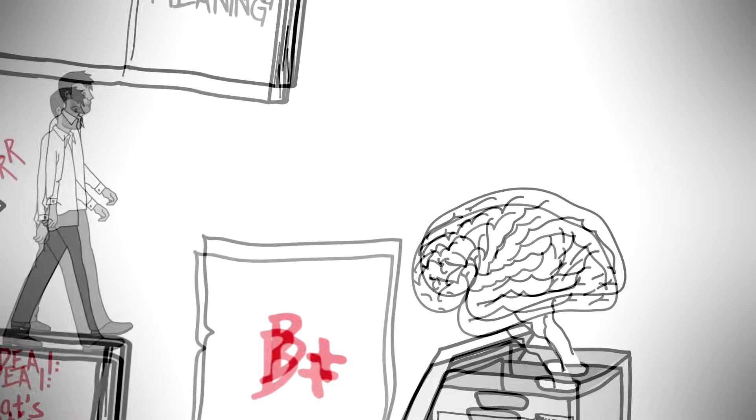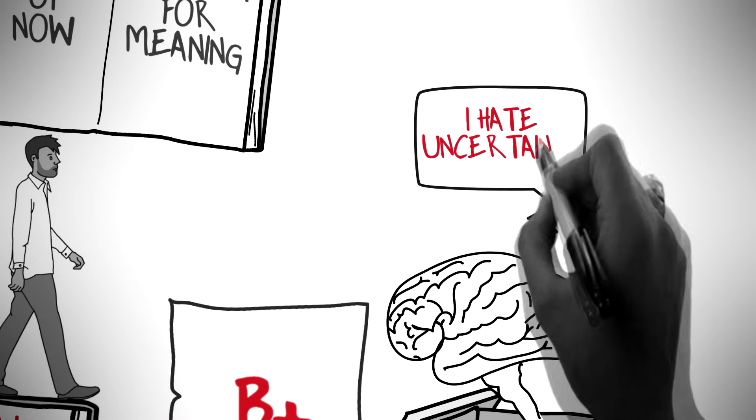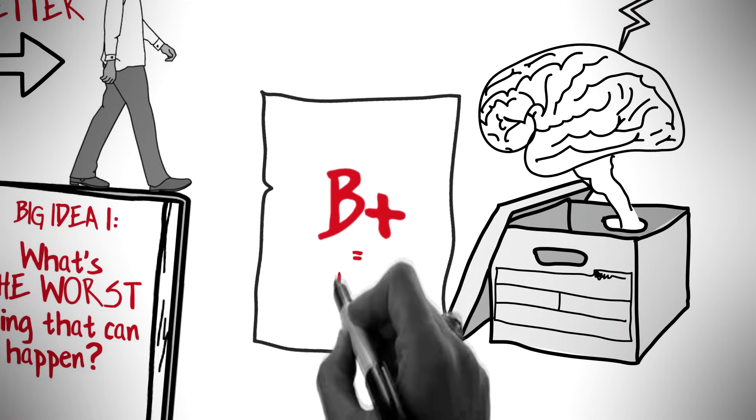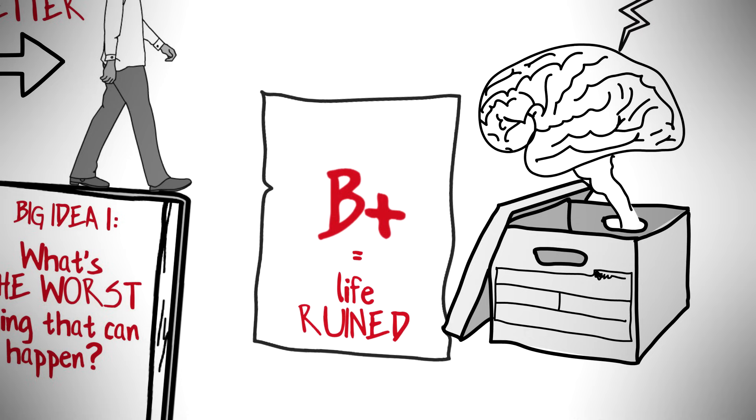It starts to freak out with uncertainty. If you don't clearly define the worst thing, your brain will find a way to equate you getting a B plus to you completely ruining your life. But in reality, the worst thing is never really that bad.